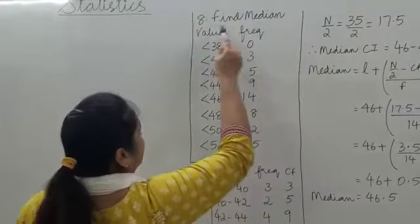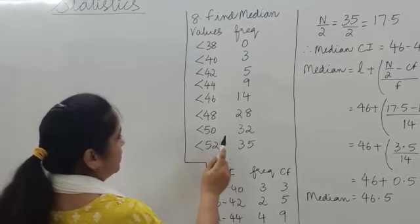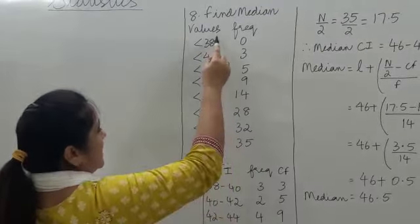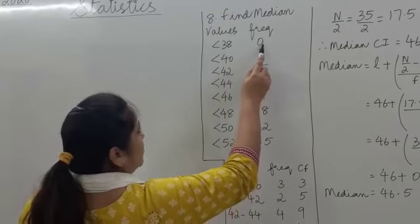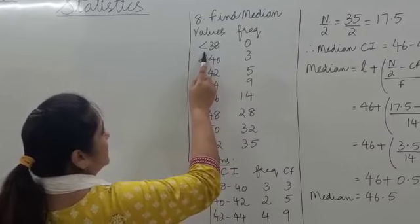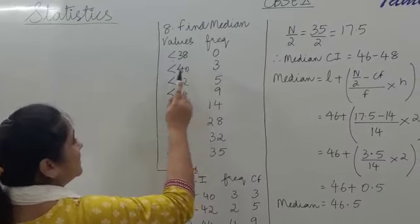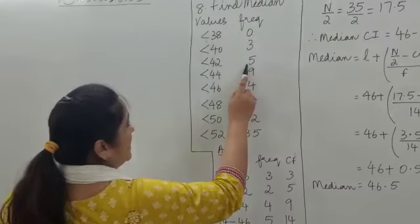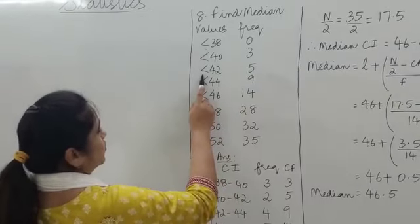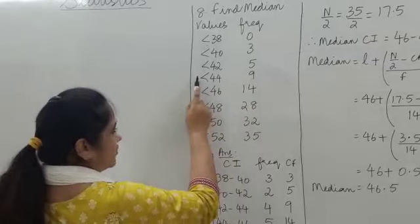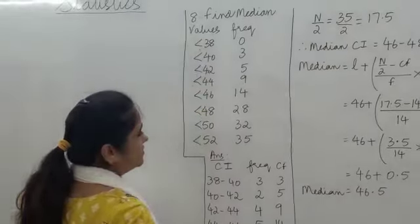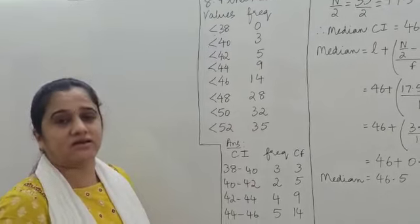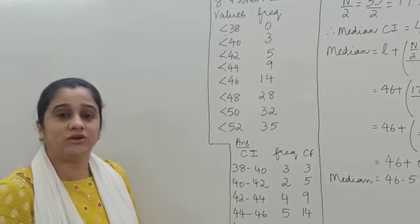We are given a less-than cumulative frequency distribution showing the less-than values along with their frequencies. We need to find the median of this distribution. There is no value less than 38, there are 3 values less than 40, 5 values less than 42, 9 values less than 44, and 35 values less than 52. This is called a less-than cumulative frequency distribution, and we need to find its median.